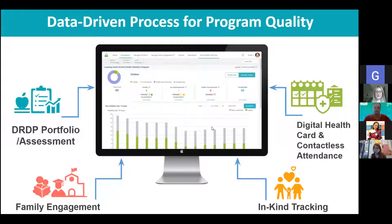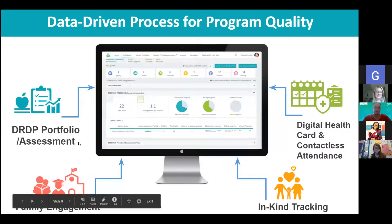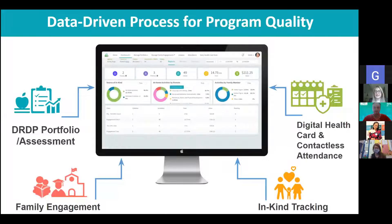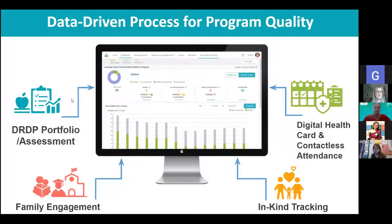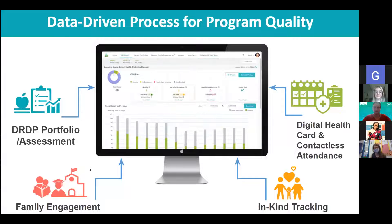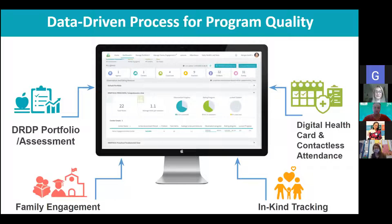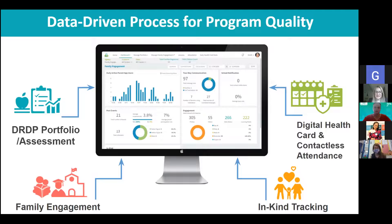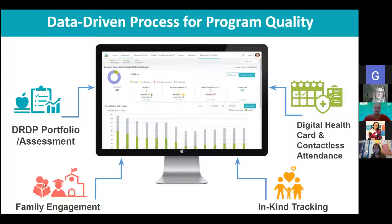There are four components to Learning Genie. We have our portfolio and assessment module, typically for DRDP assessments. This tool enables easy organization of notes and collaboration between staff to produce quality observations. We have our family engagement tool that enables two-way communication between teachers and parents with over 100 different languages for parents to have their parent app translated into, which eliminates language barriers between families and staff. Staff can also share educational videos, video books, and create virtual events and activities to share with families.